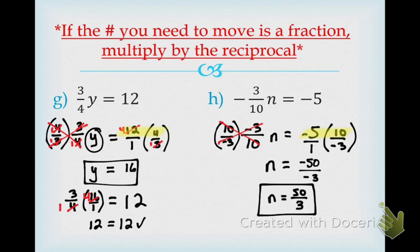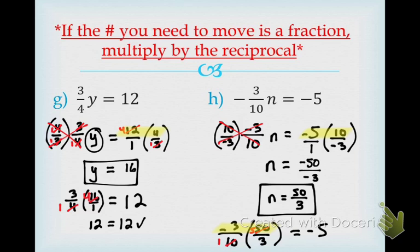That is the answer. Let's go back to the original problem: negative 3 over 10 multiplied by 50 over 3 equals negative 5. Is there anything I can cross-reduce? 10 and 5 — becomes 1 and 5. Also the 3s — this becomes 1 and the 50/3 becomes negative 1. Now multiply: negative 1 times 5 is negative 5, over 1, equals negative 5. So it checks out. Don't second-guess yourself — always go back and check your work.